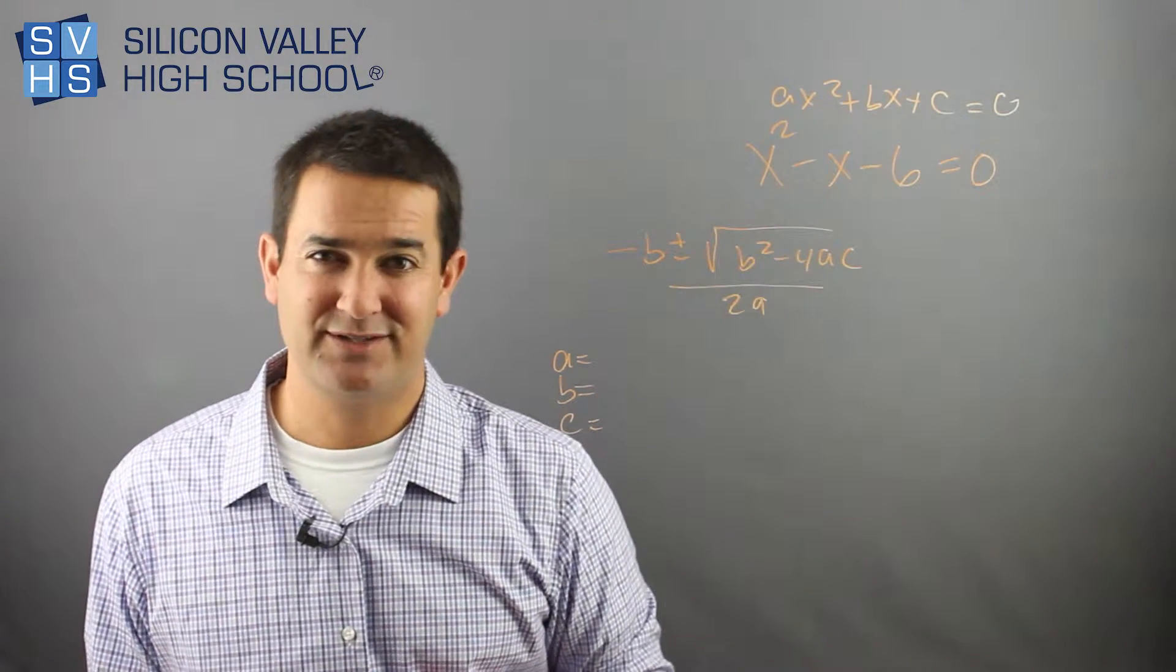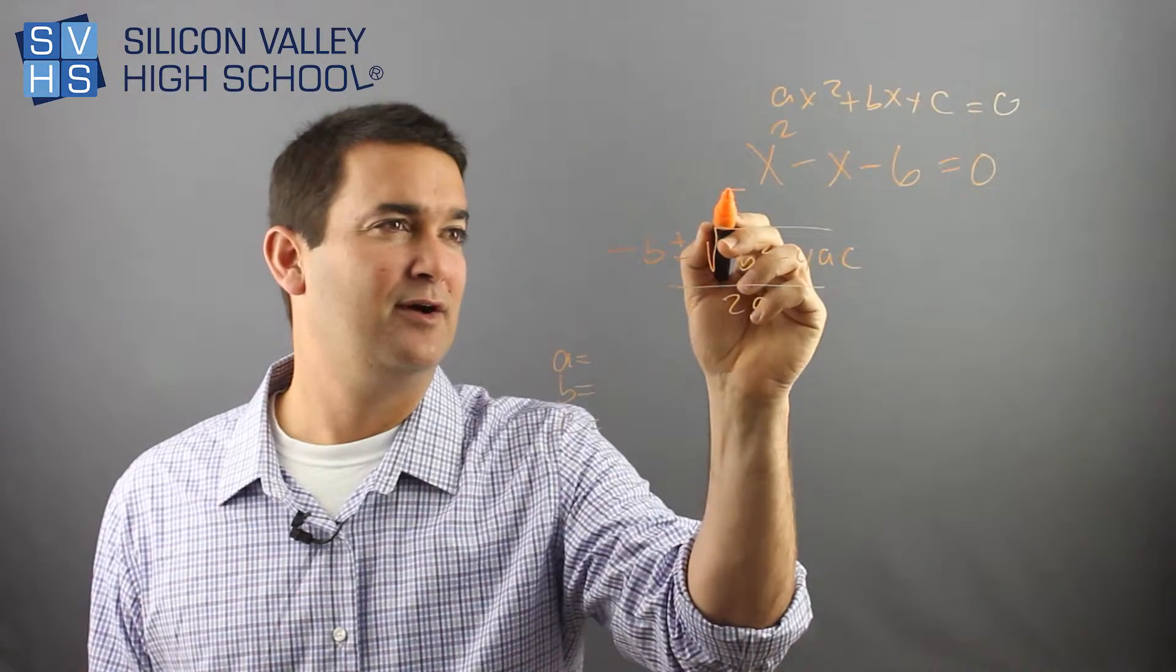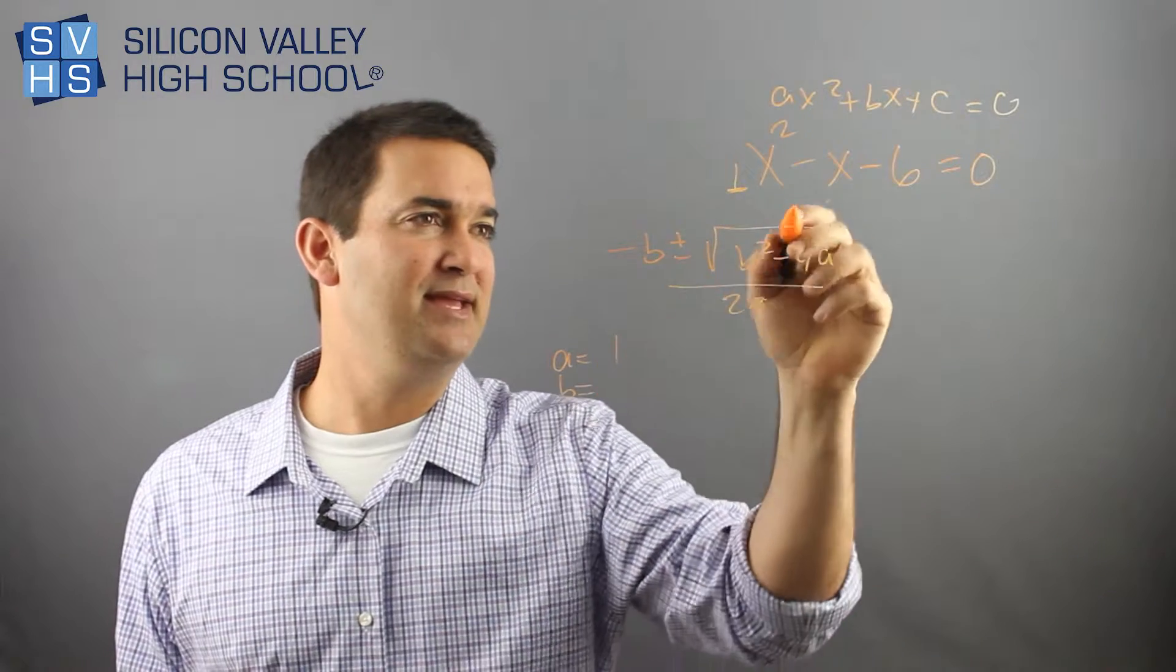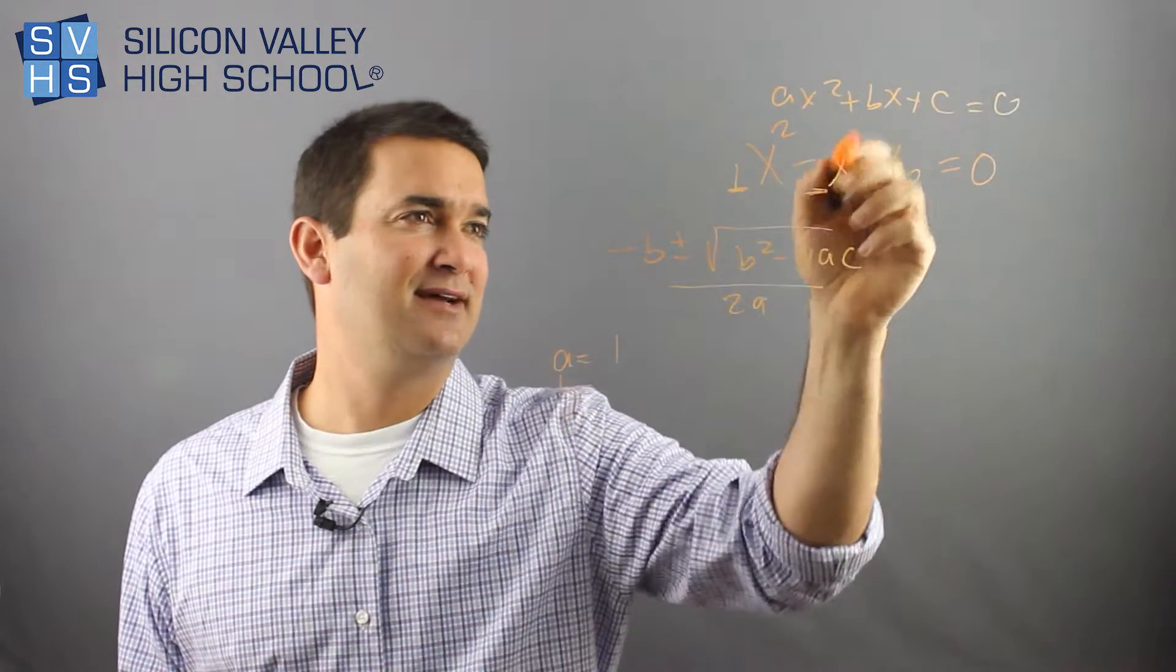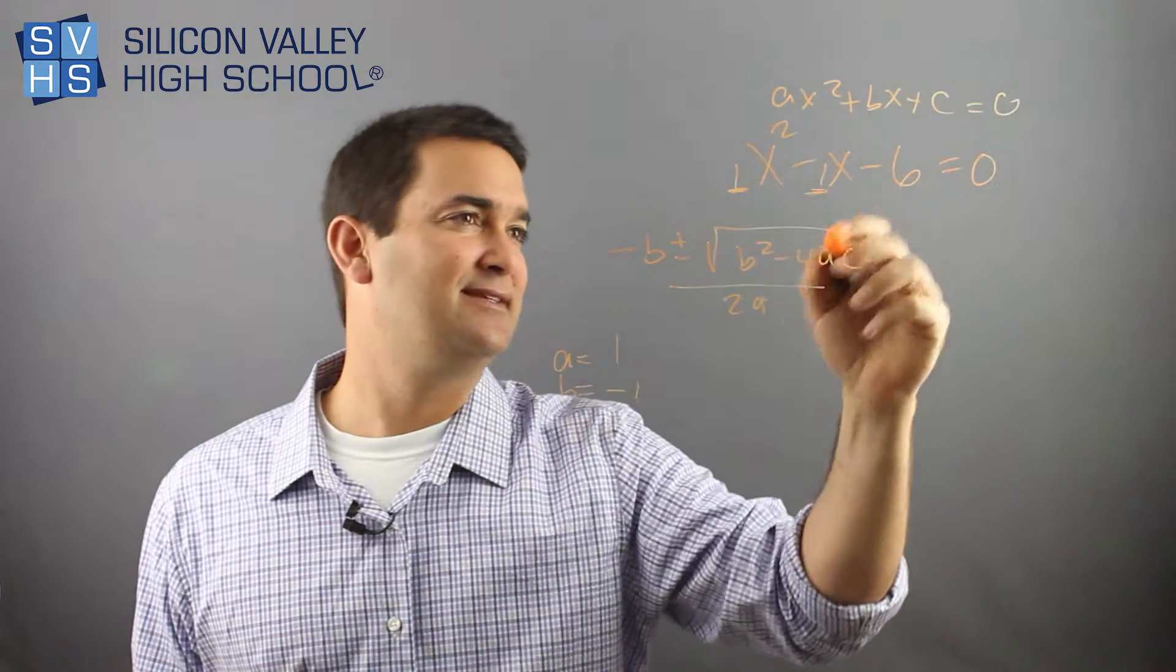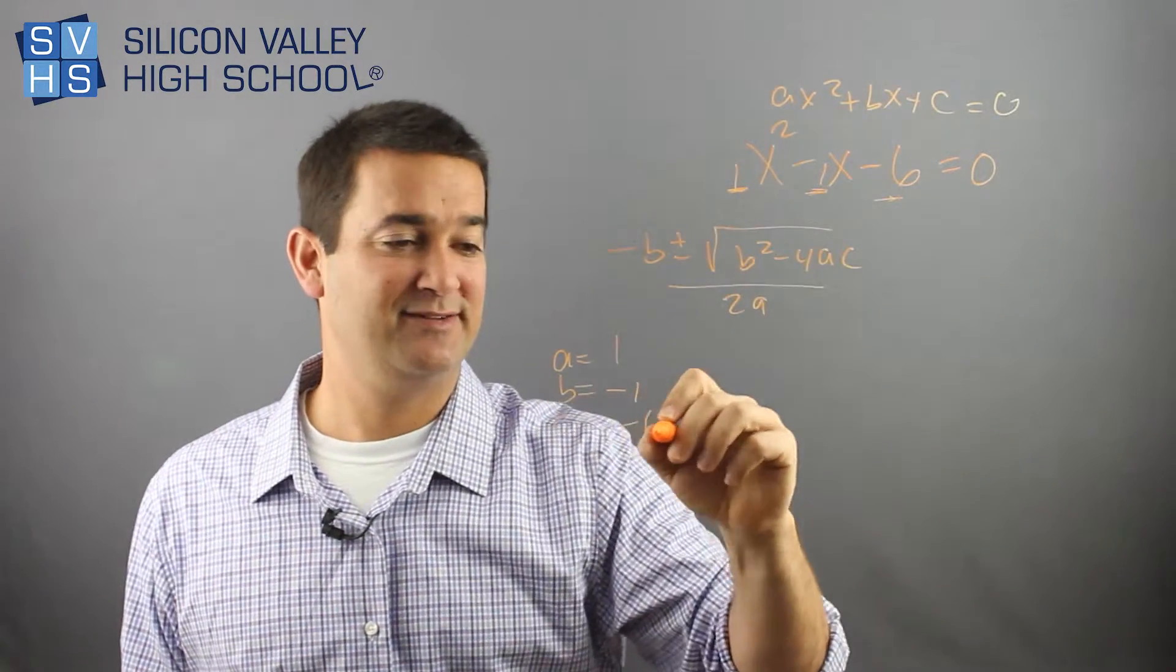So a is whoever is in front of the x squared. Oh, there's no one in front of the x squared. Okay, so then it has to be a one, right? So a is one. b is the guy in front of the x. So it looks to me like it's negative one. And c, in this case, would be the last guy, which is negative six. Cool?